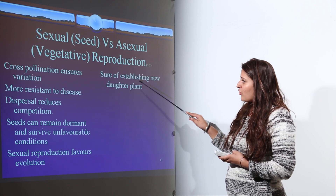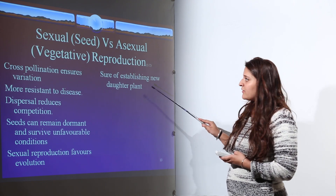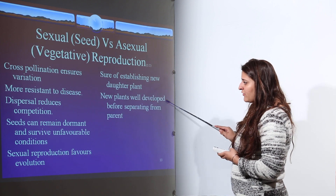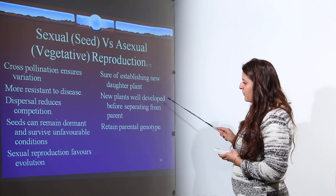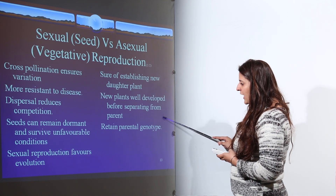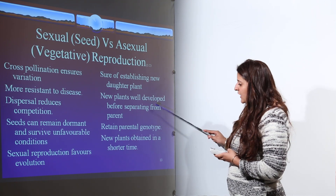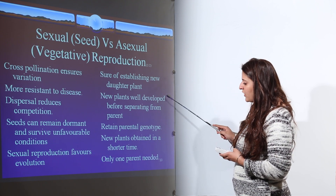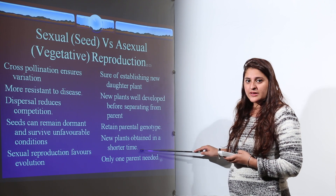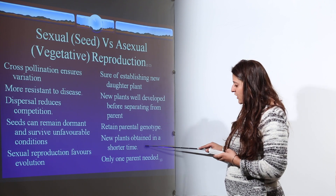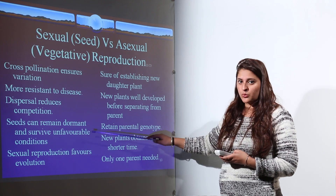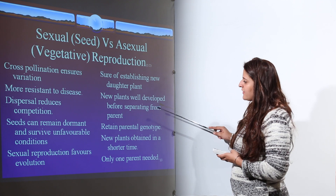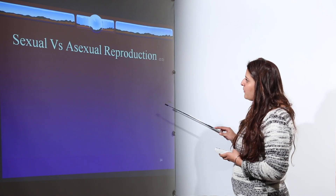In asexual reproduction, there is a short period of establishing a new daughter plant. The new plants are well-developed before separating from the parent plant and retain the parental genotype. New plants are obtained in a shorter time and don't need a long duration. Only one parent is needed since asexual reproduction is uniparental, while sexual reproduction is biparental. The organism formed through asexual reproduction is genetically similar to the parent plant.